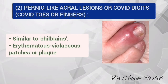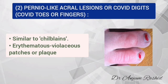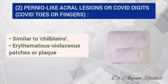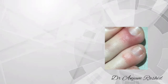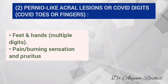The second manifestation is pernio-like acral lesion, also called COVID digits, COVID toes, or COVID fingers. This is similar to chilblains, which is typically seen in colder months, but COVID-19 patients may develop this rash in warm weather. This rash appears as erythematous or squamous patches or plaques and there may be associated edema of the digits. It predominantly involves feet or, to a lesser extent, hands, and multiple digits may be affected.